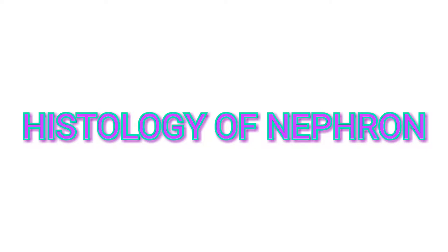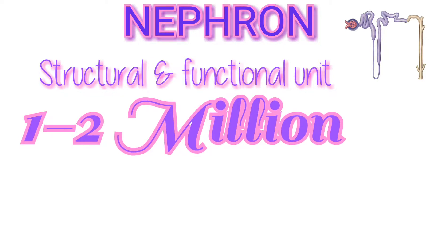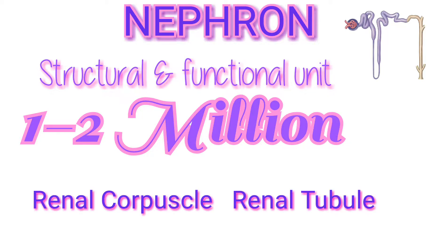Welcome to Study Pharma. In today's video I will explain about the histology of nephrons. Nephrons are the structural and functional unit of kidneys. The kidney is composed of about one to two million nephrons and a small number of collecting ducts. Nephrons consist of two portions: the renal corpuscle and the renal tubule.